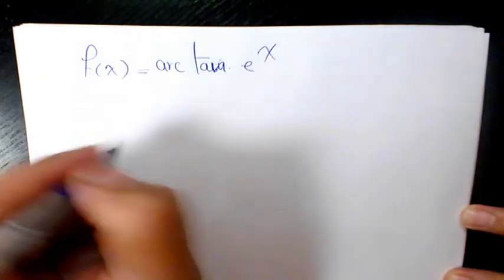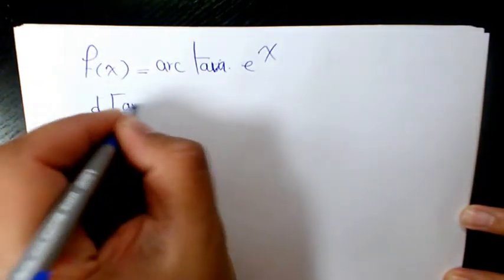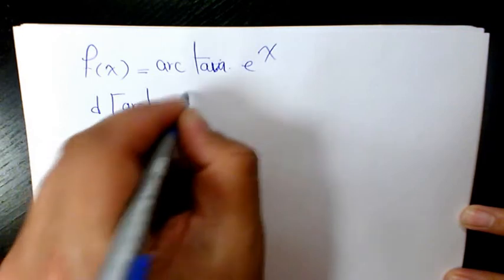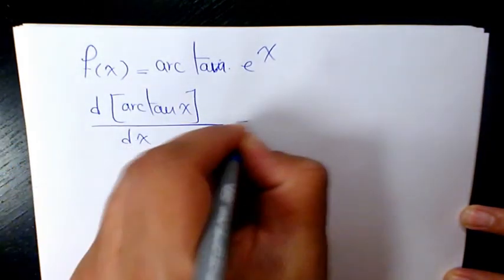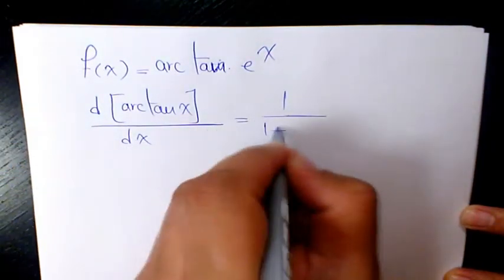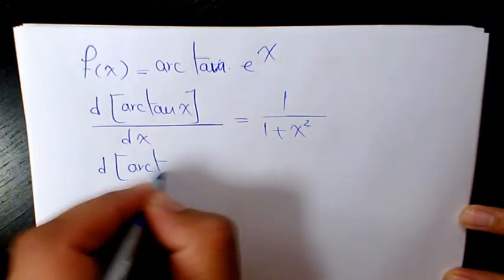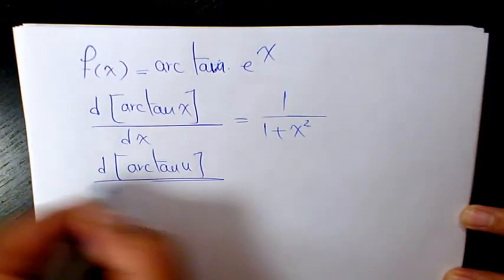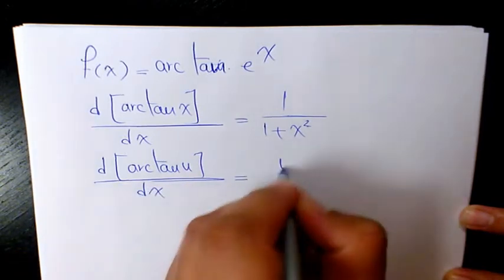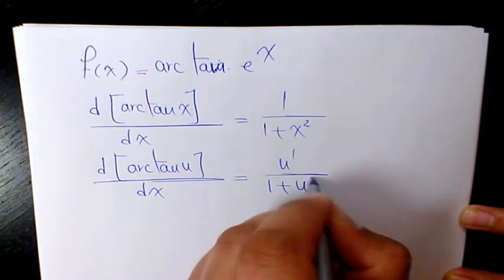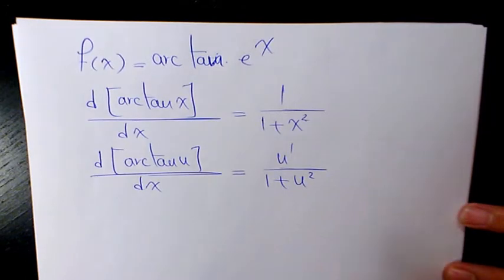f of x equals arc tan e to the power of x. Derivative of arc tan x with respect to x is 1 over 1 plus x squared. Derivative of arc tan u when u is a function of x with respect to x is going to be u prime over 1 plus u squared.